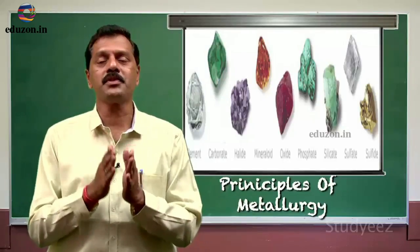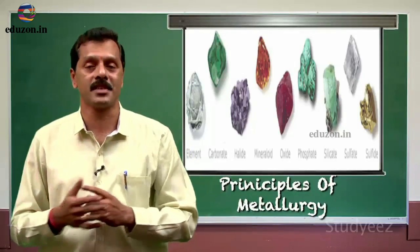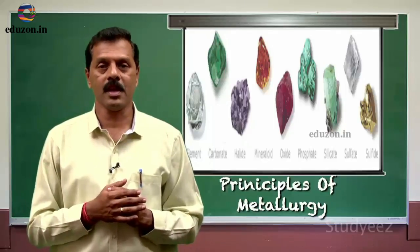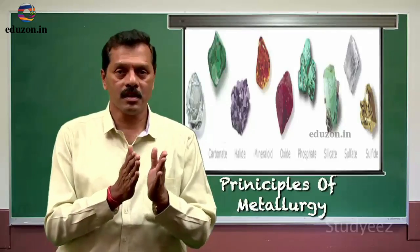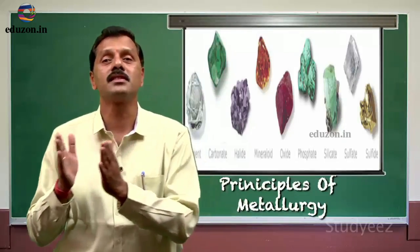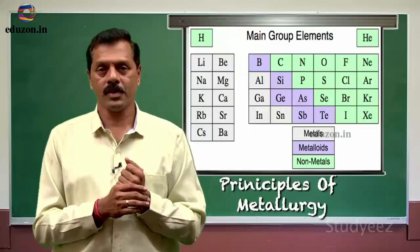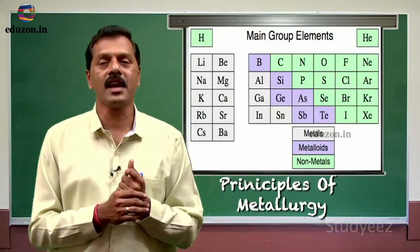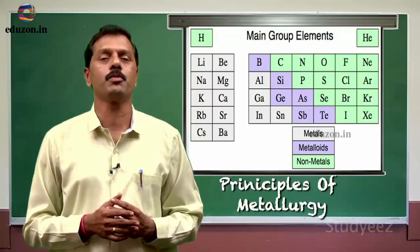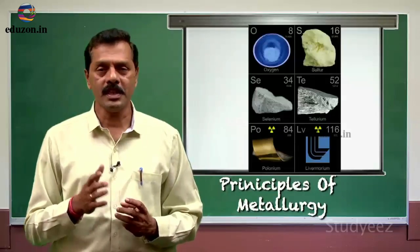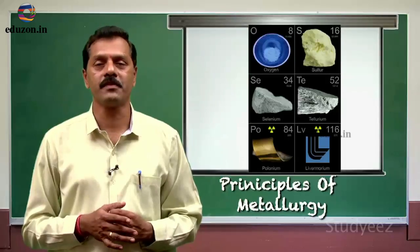Different metals occur in different states. Metals occur in the form of oxide ores and sulphide ores. The oxygen and sulphur family, which is the 16th group of the periodic table, is called the chalcogen family.